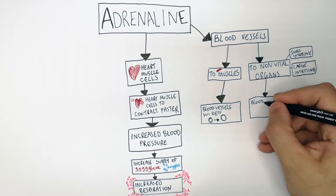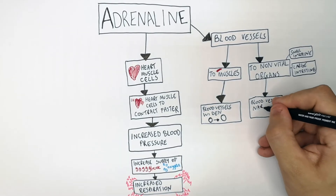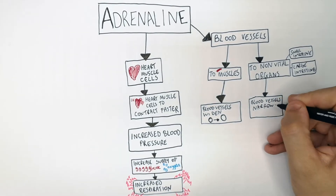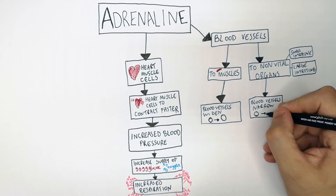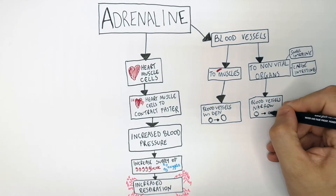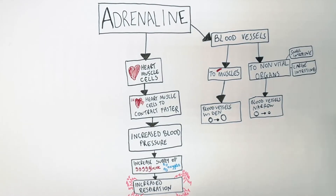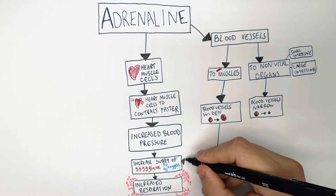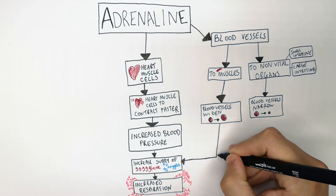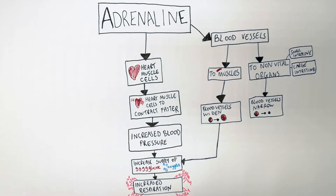Whereas blood vessels to non-vital organs are going to narrow, restricting blood flow to the non-vital organs. This will maximize blood flow to respiring muscle cells, increasing the volume of glucose and oxygen being supplied to your respiring cells.